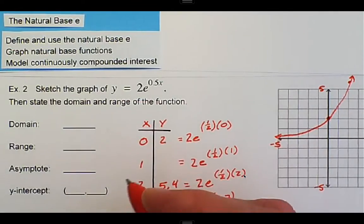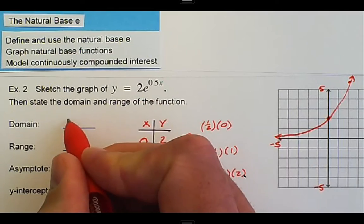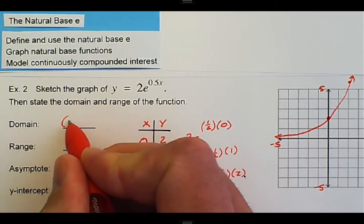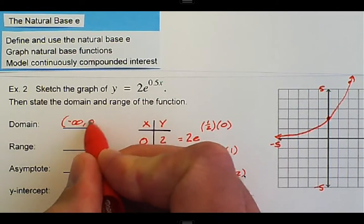Our domain for this is the same as the exponential. It's going to be all real numbers, or negative infinity to infinity.